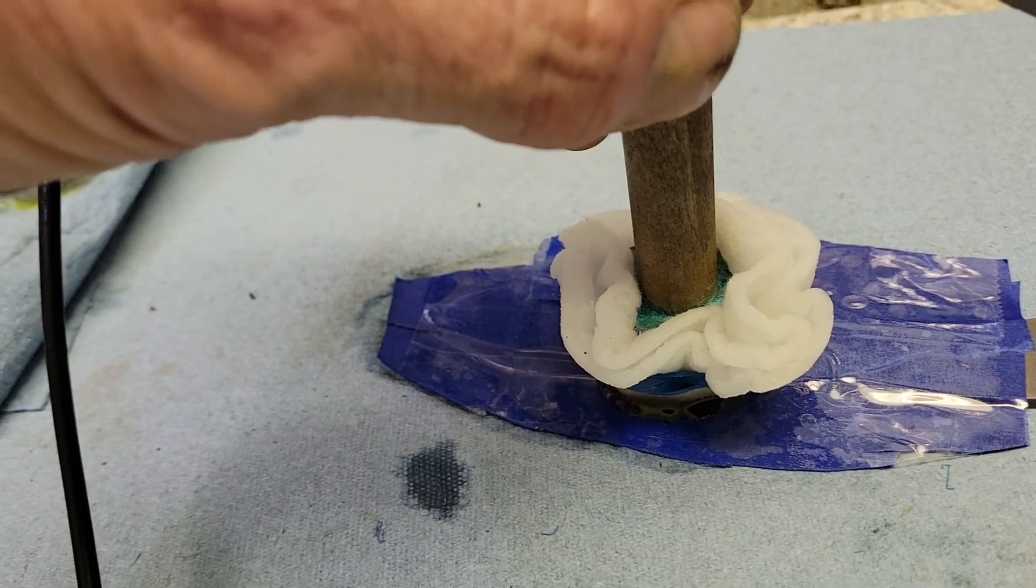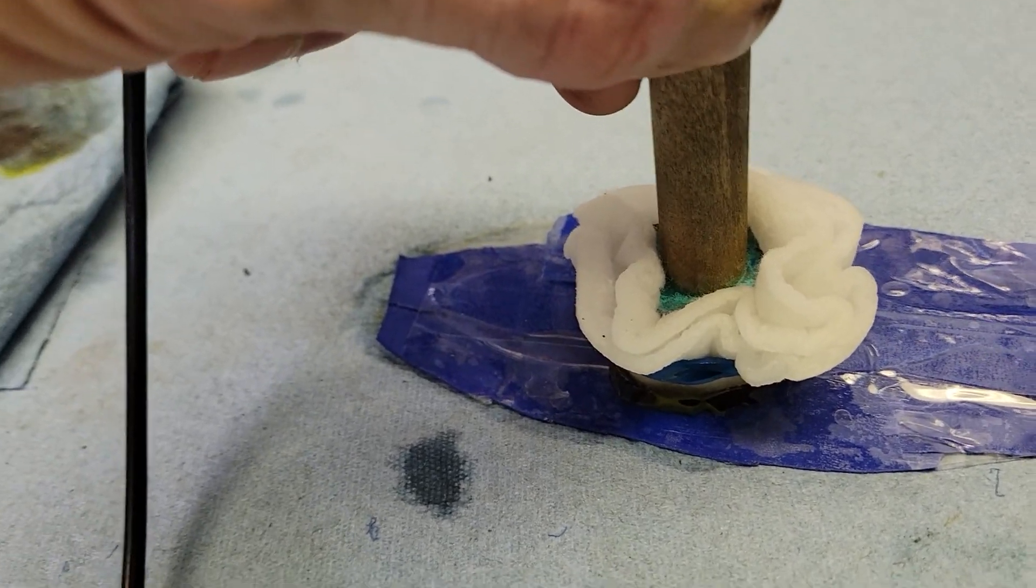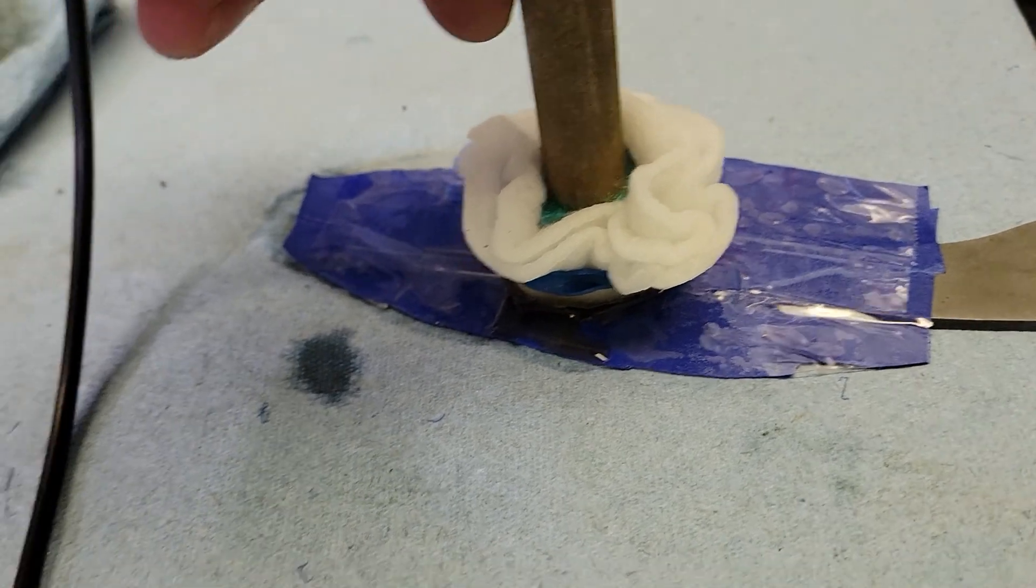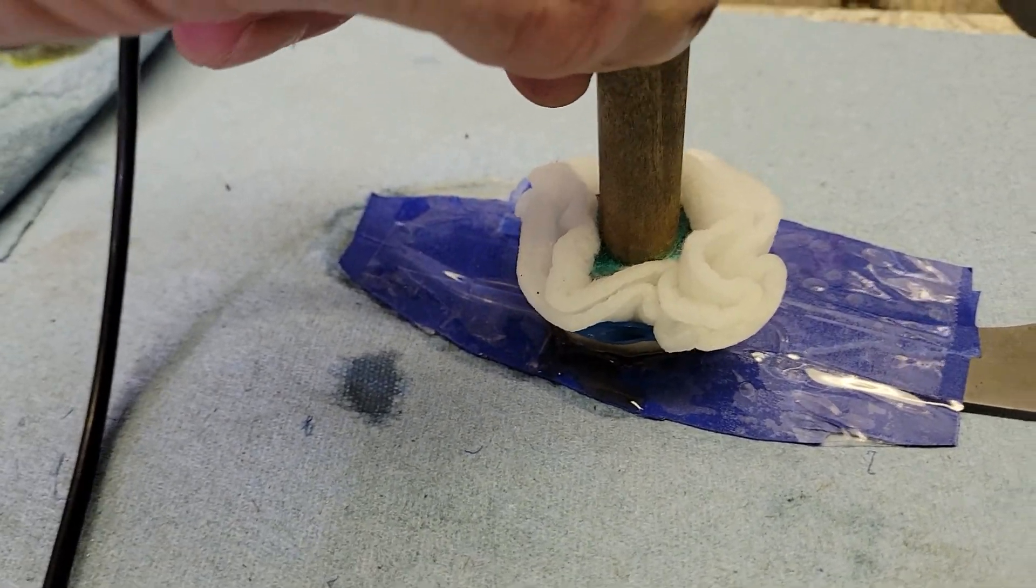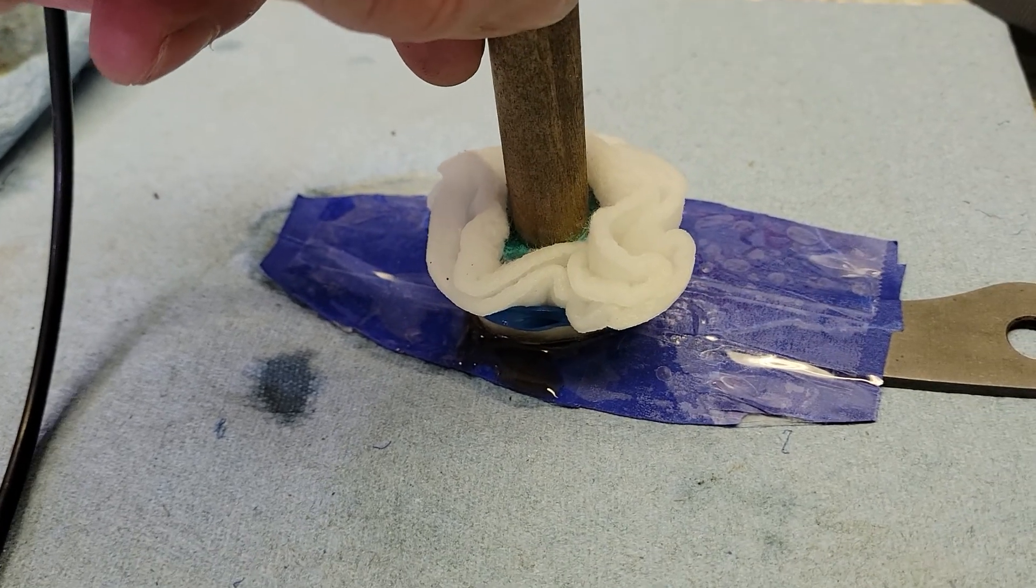In order to etch the area I want, I make up a stencil. I put that on the blade, then I tape off the rest of it so my solution doesn't get onto the parts of the blade that I don't want etched, because the chemical reaction will stain the blade.